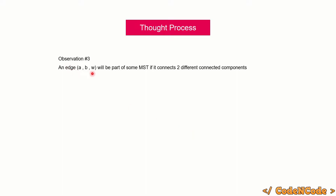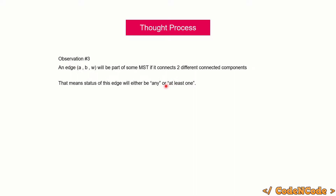Observation three: an edge A-B-W will be part of at least one MST if it connects two different connected components. This makes sense — if you've studied Kruskal's or Prim's algorithm you know that you add an edge if and only if it connects two different connected components. In Kruskal's you check whether find(A) is not equal to find(B), meaning A and B are in different connected components. So if this edge connects two different components, its status will be either 'any' or 'at least one'.